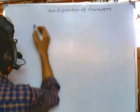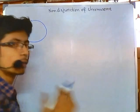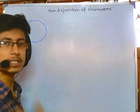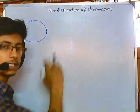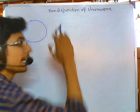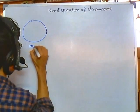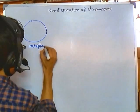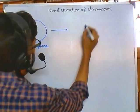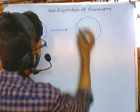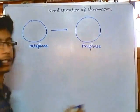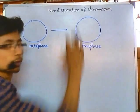Let me draw a cell. In normal cell division, there are sequential stages of cell division. Those sequential stages are prophase, metaphase, then anaphase, then telophase. The most important stage for the alignment of chromosome is metaphase, and after that, the segregational step occurs in anaphase. These are the two stages that are very important during chromosomal segregation.